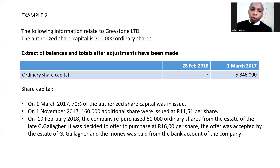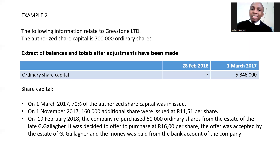On 19 February 2018, the company repurchased 50,000 ordinary shares from the estate of G. Galaga. The purchase price offered was R16 per share, which was accepted, and the money was paid from the company's bank account. Note that R16 was the market value on 19 February — this is not the original price. Remember: ordinary share capital increases and decreases at cost price.